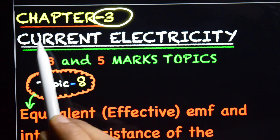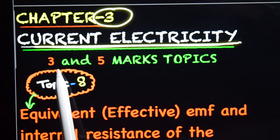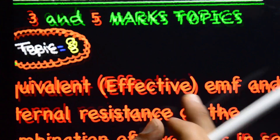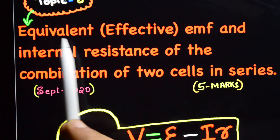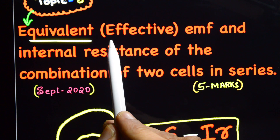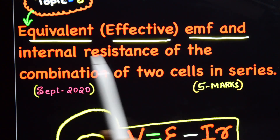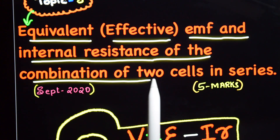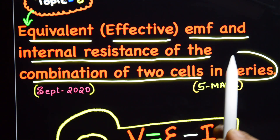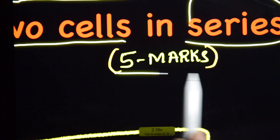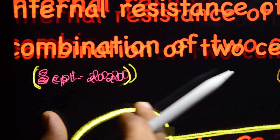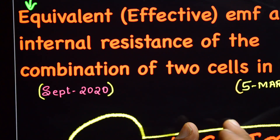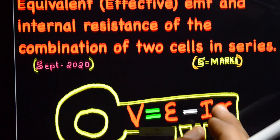Chapter 3, Current Electricity — 3 and 5 marks topic. This is our topic number 8: equivalent or effective EMF and internal resistance of the combination of two cells in series.